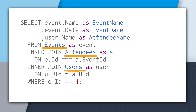We can do this because of the foreign keys in the attendees table. Attendees has an event ID which references events, and it also has a user ID which references users. So when we inner join these together, we can create the data set we need to get all the users' data that are going to a specific event.